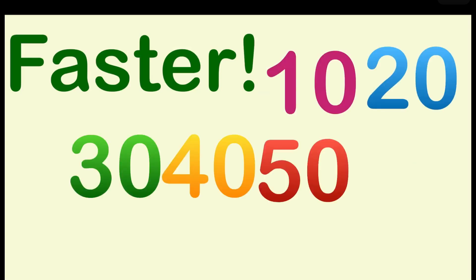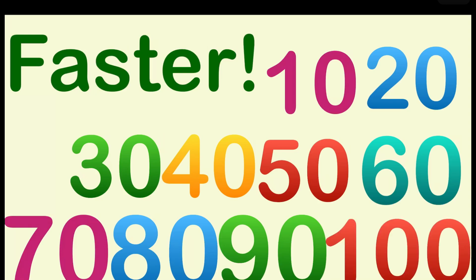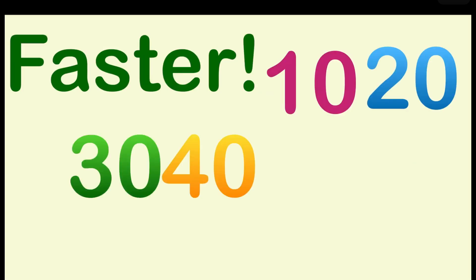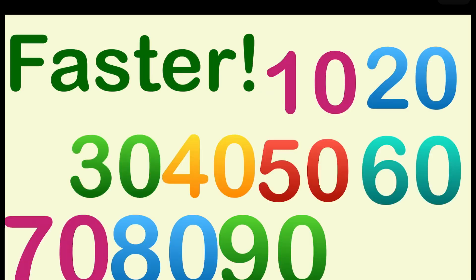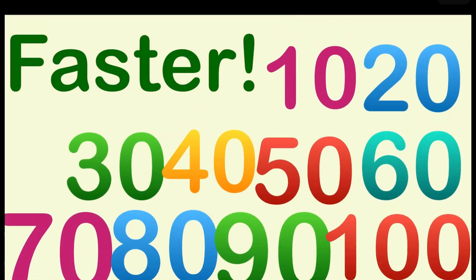10, 20, 30, 40, 50, 60, 70, 80, 90, 100. 10, 20, 30, 40, 50, 60, 70, 80, 90, 100. That is skip counting by tens.